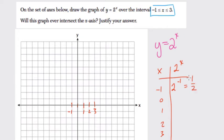2 to the 0 power, where x is 0, is equal to 1. 2 to the 1st is equal to 2. 2 to the 2nd is equal to 4. And 2 to the 3rd is equal to 8.